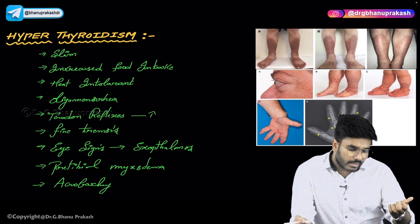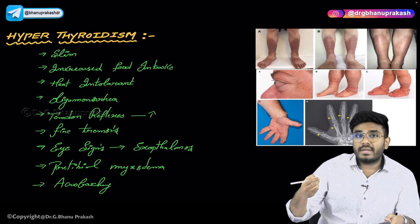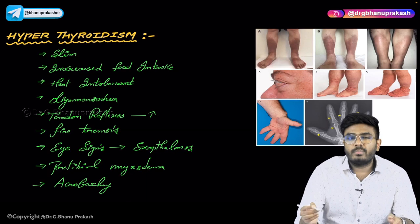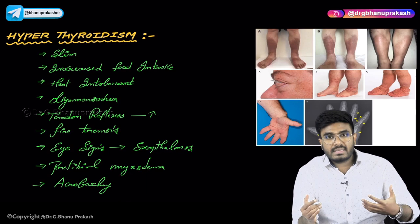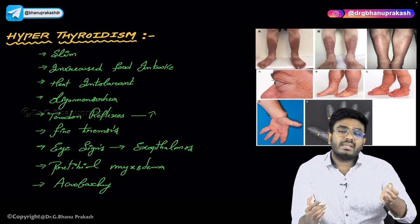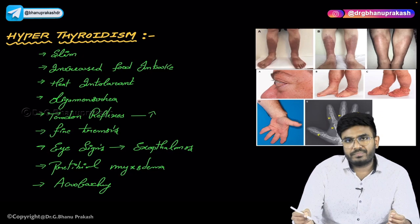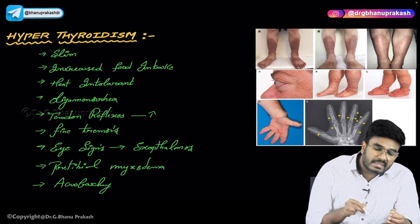What I want you to understand is: a person who has hyperthyroidism will be slim in nature — not obese. Why? Because the number of calories being burned is increased. Interestingly, even though he is slim, he is taking more food intake. Even with more food intake, he still remains slim.